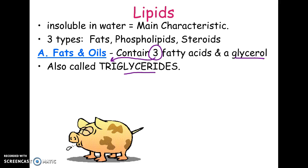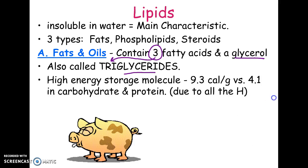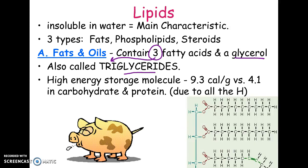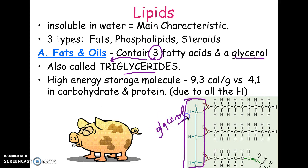Here's a diagram of a triglyceride. This is the glycerol, and these long chains are the fatty acids — one, two, three. So three fatty acids and a glycerol. Triglycerides will always look like that: three long chains coming off of one little three-carbon molecule.